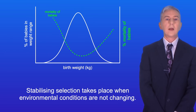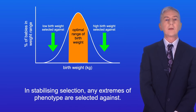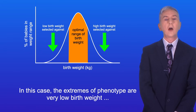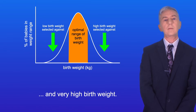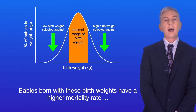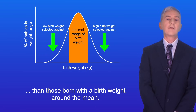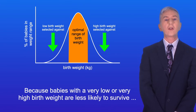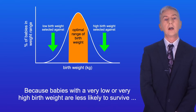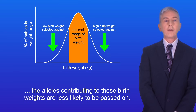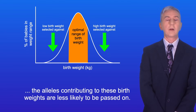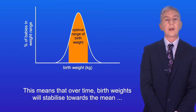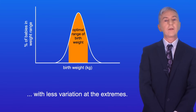Stabilizing selection takes place when environmental conditions are not changing. In stabilizing selection, any extremes of phenotype are selected against. In this case, the extremes of phenotype are very low birth weight and very high birth weight. Babies born with these birth weights have a higher mortality rate than those born with a birth weight around the mean. Genetics play a major role in birth weight, so because babies with a very low or very high birth weight are less likely to survive, the alleles contributing to these birth weights are less likely to be passed on. This means that over time birth weights will stabilize towards the mean, with less variation at the extremes.